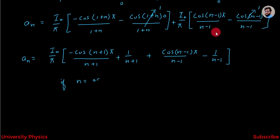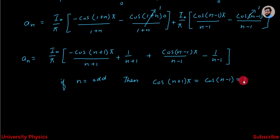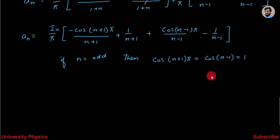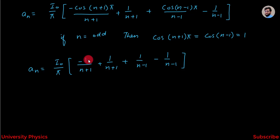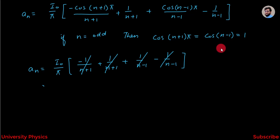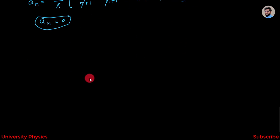Now, if n is odd, then cos((n+1)π) and cos((n-1)π) are both equal to 1. We get aₙ = (I₀/π)[-1/(n+1) + 1/(n+1) + 1/(n-1) - 1/(n-1)]. These terms cancel each other, so for n equal to an odd number, aₙ = 0.